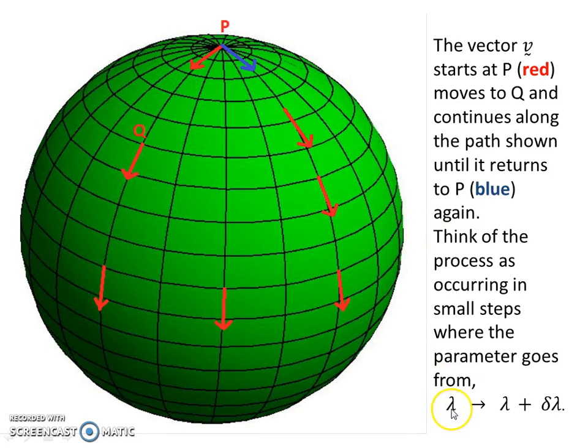We do this in little small steps, where the parameter changes from lambda to lambda plus delta lambda. So we do little incremental changes in which we keep the vector parallel to itself as we go. Of course, we're bound to the surface, we can't move off the surface of the sphere, and so our vector v will always be tangent, lying in the tangent plane as we parallel transport it around.